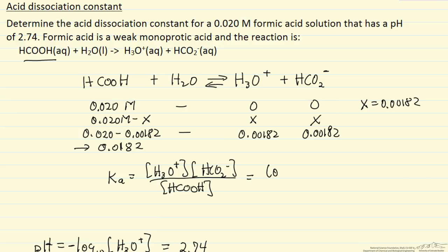We can substitute these numbers. This is squared over 0.0182. Now we get an acid dissociation constant of 1.8 times 10 to the minus 4.